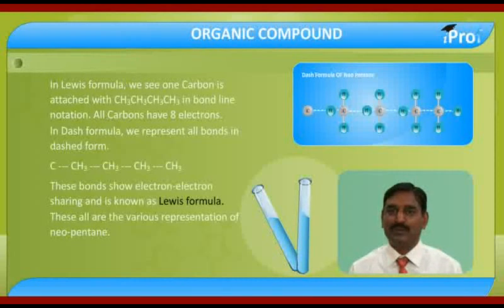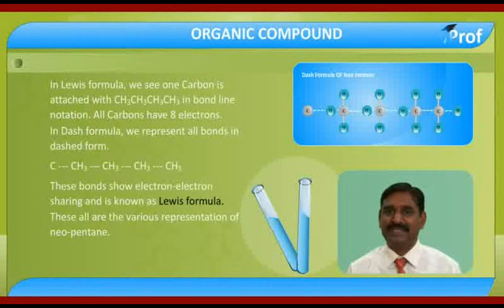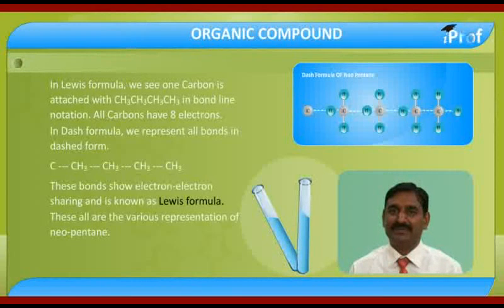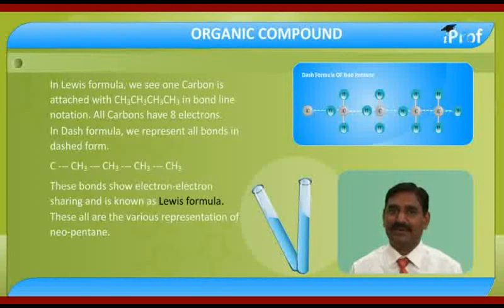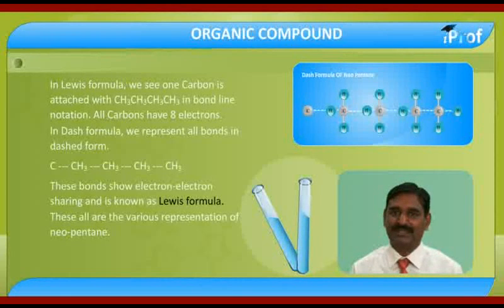In Lewis formula, when we represent this formula, one bond is represented by one bond with electron sharing. One bond, carbon octet complete, and we represent like that. This is known as Lewis formula.